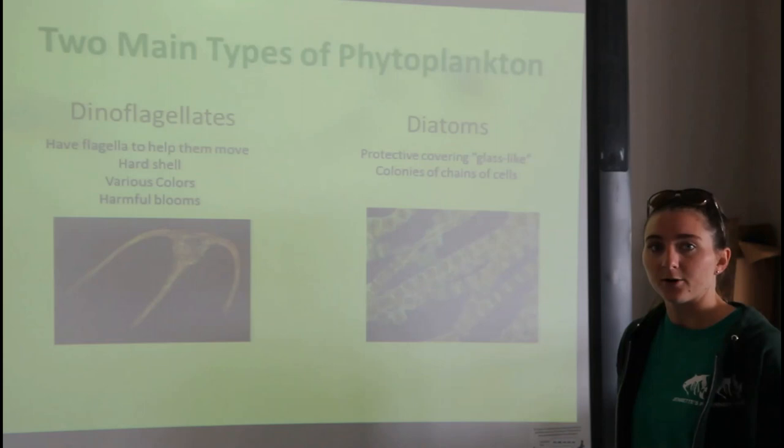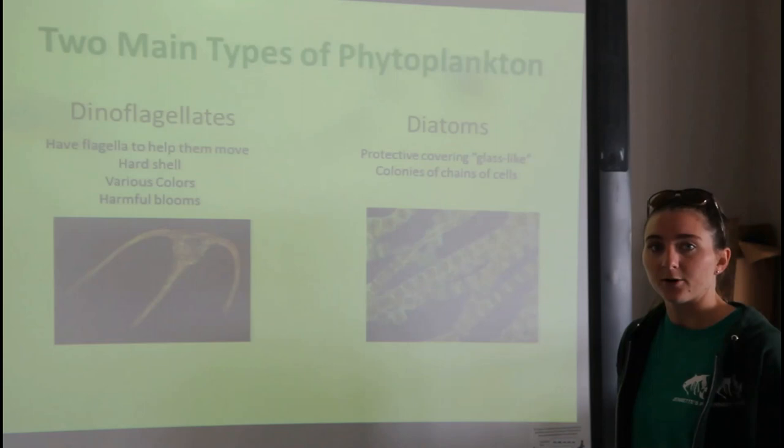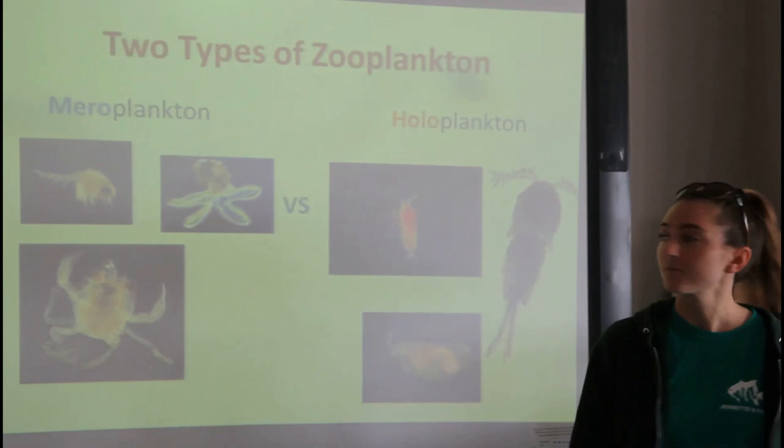Diatoms are the other main type of phytoplankton. They kind of resemble stained glass — they have little segments and can be individuals or all linked up into a chain.